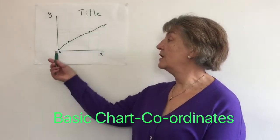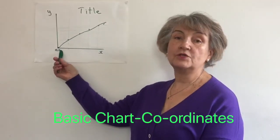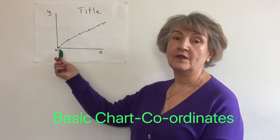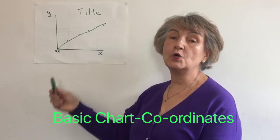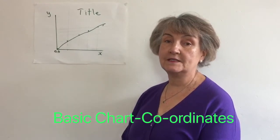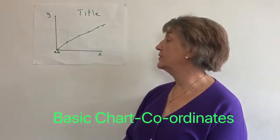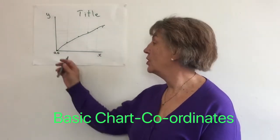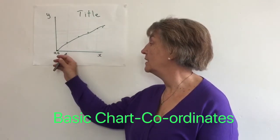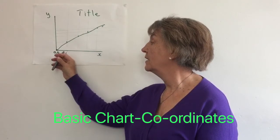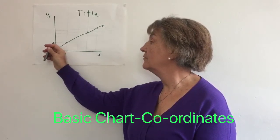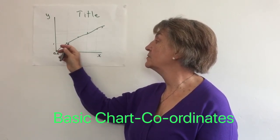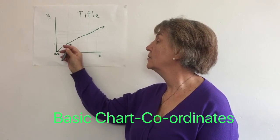Now I'm going to explain why I put 0, 0. These are called coordinates. So you get a value of 1 here, and a value of 1. This one is 1, 1.